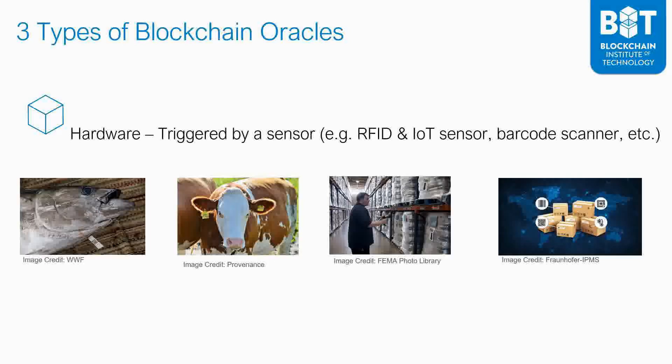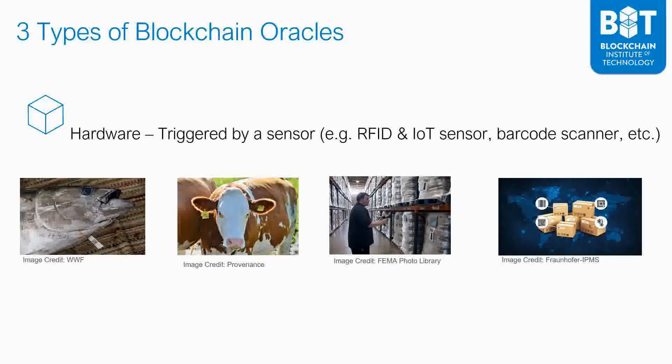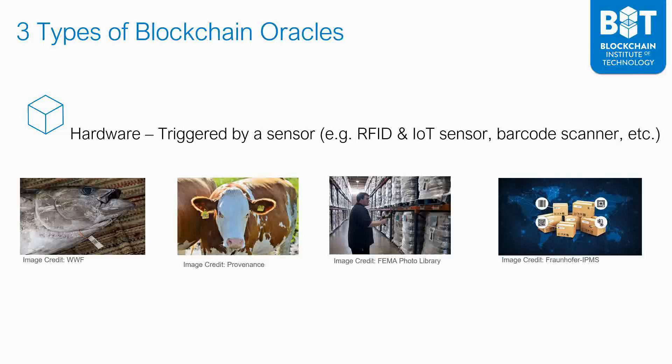What you are seeing here are actual blockchain tags that are being used. You can see how fish are tagged with QR codes, and how beef is individually tracked with a unique number for each animal. As different packages make their way through the supply chain, there are barcode scanners along the way that capture this information. With a blockchain-based system, you're able to consolidate and bring all that information together from every single stage, giving full visibility as each product moves through.